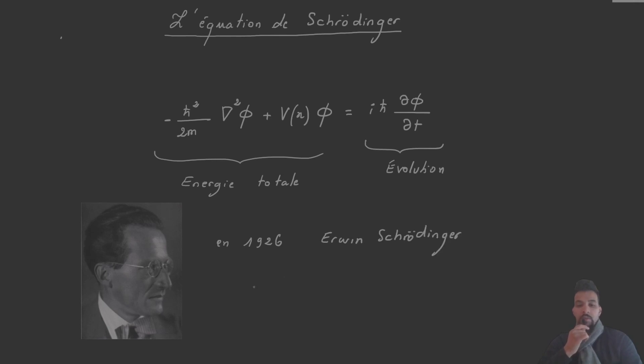This equation is called non-relativistic because it does not take into account the effects of Einstein's theory of special relativity. It thus mainly applies to particles moving at speeds much slower than the speed of light.